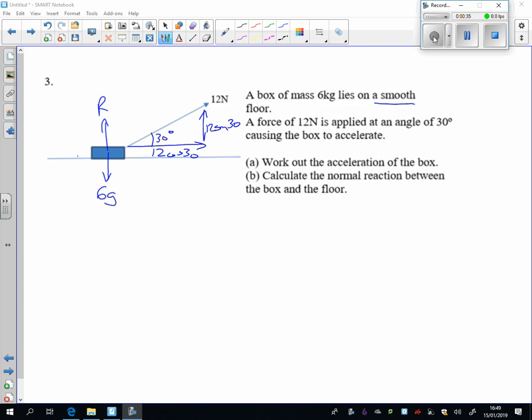So it's going to end up going off to the right-hand side. Let's look at the forces in that direction. There's only the one force, 12 cos 30. So if I use F equals MA,